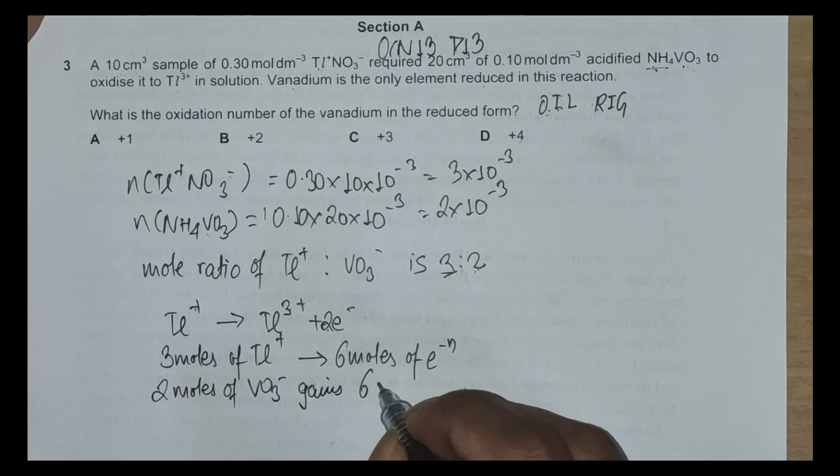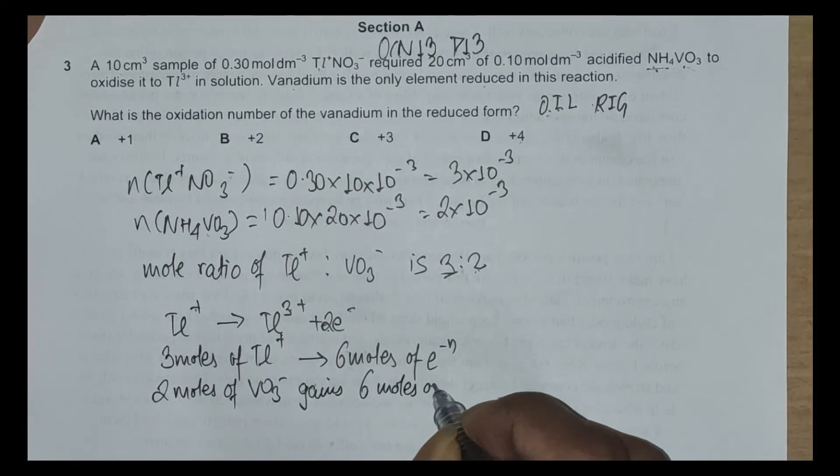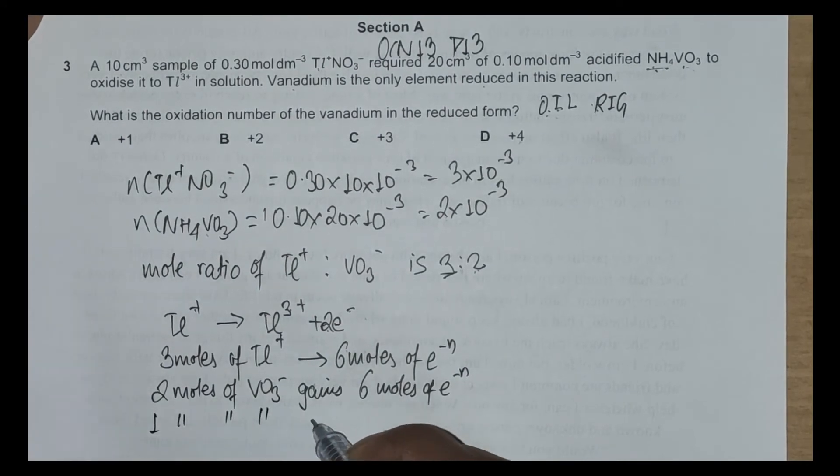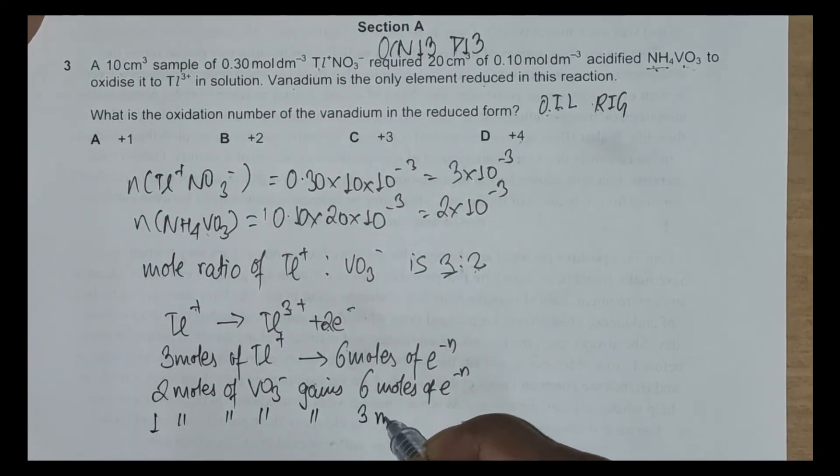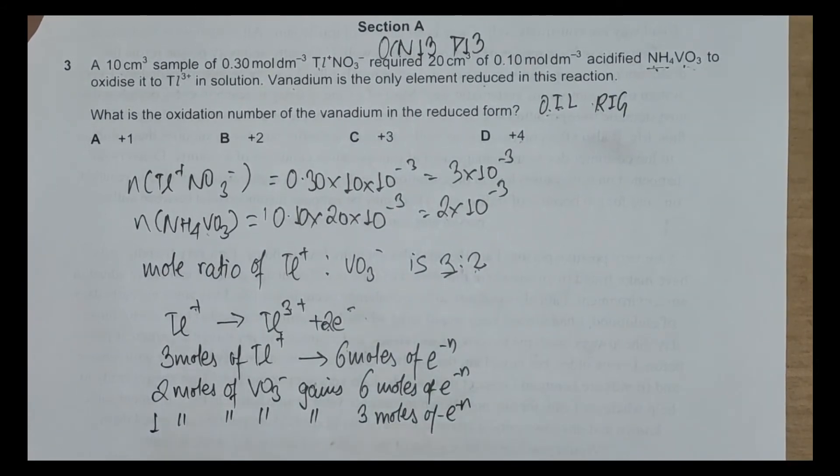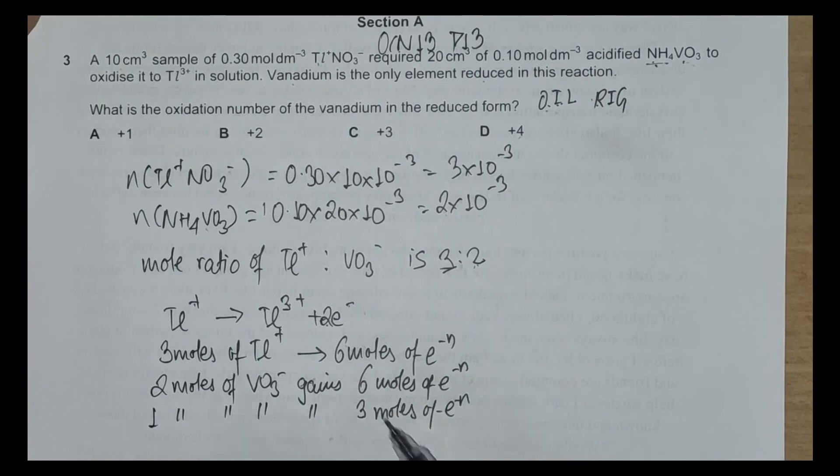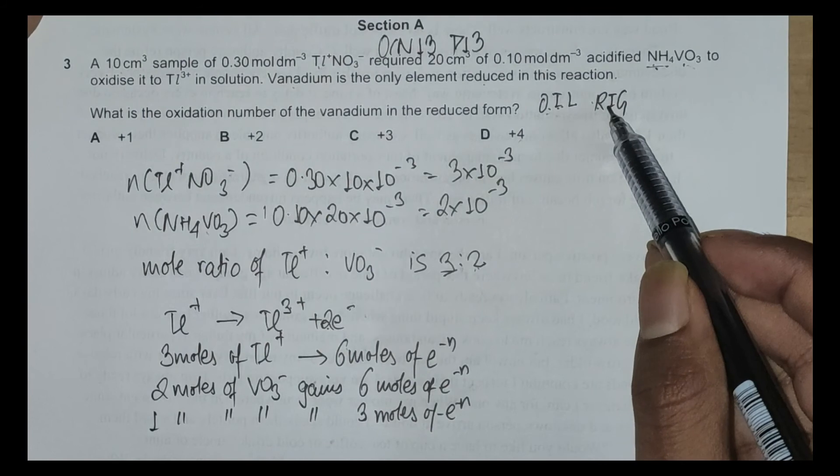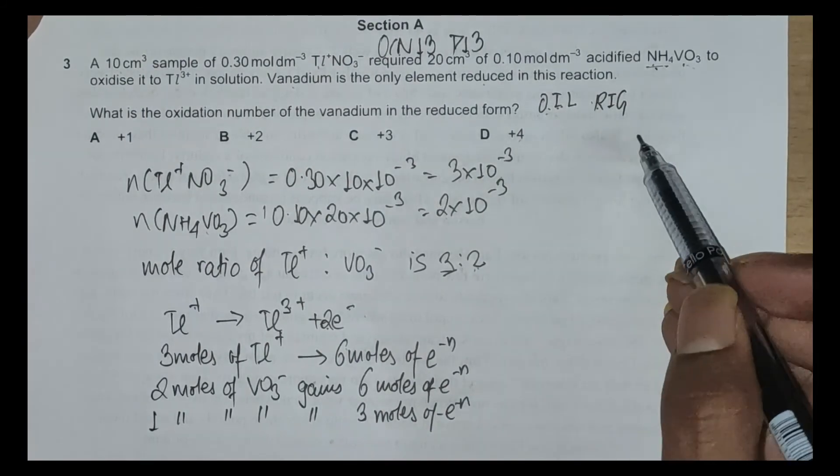gains 6 moles of electrons, and again reducing this, 1 mole of VO₃⁻ gains 3 moles of electrons. Gaining 3 electrons means oxidation number should reduce by 3 units.